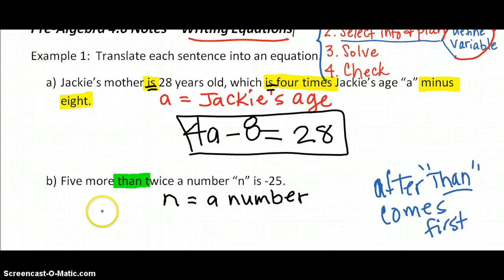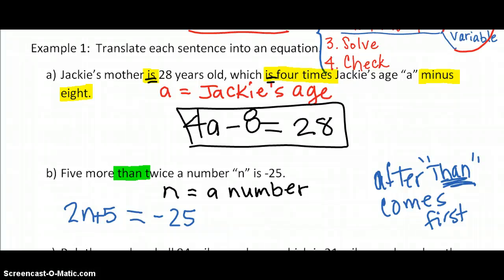So here we go. Five more than, so that's going to go last. Five more than twice a number n is negative 25. Five more than, so whatever comes after the word than, twice a number n, goes before the five more. It is not as important on our adding problems as it is on our subtraction problems. So let's get in the habit. Whenever we hear the word than, whatever comes after than goes first. And that's the equation for that sentence.